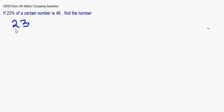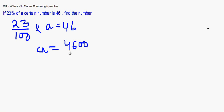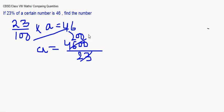The same type of question can be reversed. For example: if 23% of a certain number is 46, find the number. We write 23/100 × a = 46, so a = 46 × 100/23. Since 23 × 2 = 46, the answer is a = 200. So 23% of 200 is 46.